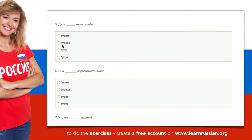The next one. Дети — children. Мешать — disturb. Тебе — you. The options are: будем, будете, буду, будут. Дети — we can say they, они — takes the ending -ут. Дети будут мешать тебе. Children will disturb you.